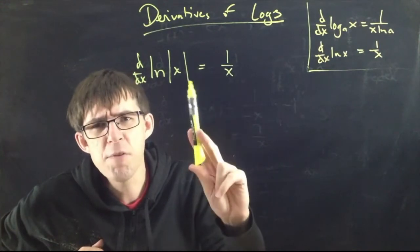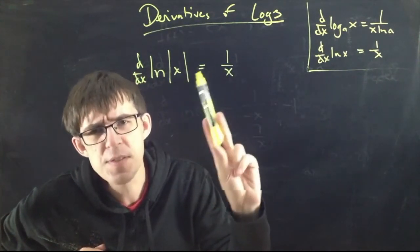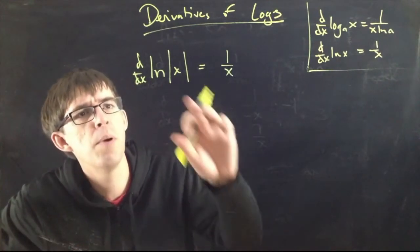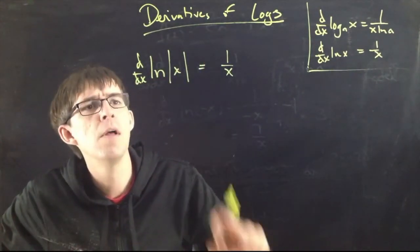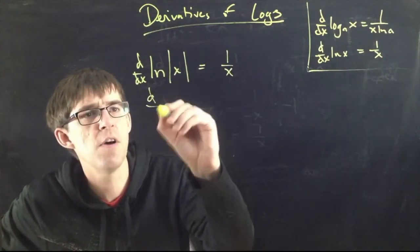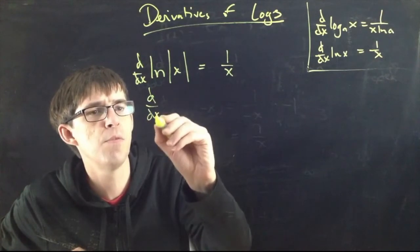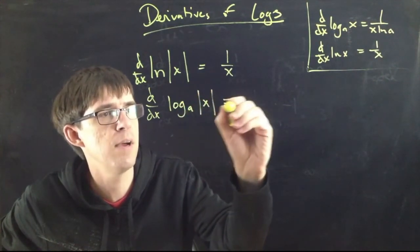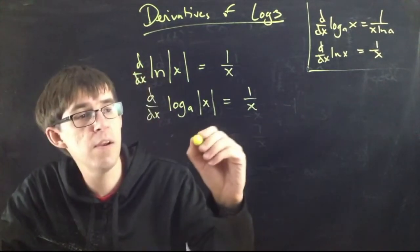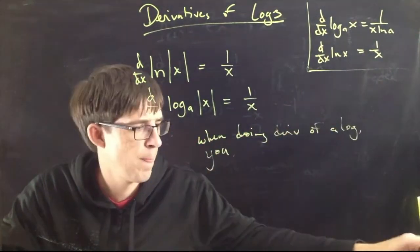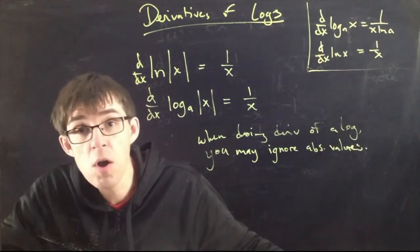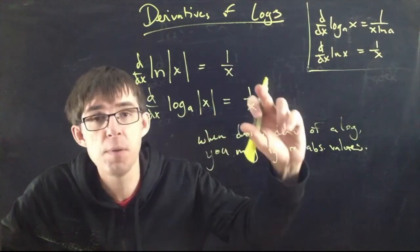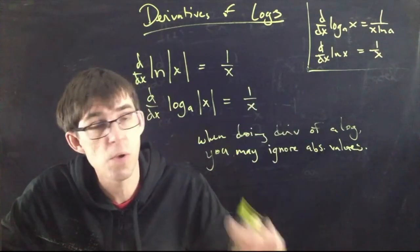What that means is: the derivative of the log of the absolute value of x equals 1 over x. This is the same as the standard formula, only with absolute values inside. When you're taking the derivative of the log of something, it doesn't matter if that thing is positive or negative — you get the same answer either way. So you can put absolute values in there and it will not change the answer. The result is just 1 over x, not 1 over absolute value x. Why would you ever encounter log of absolute value? It turns out this comes up a lot — you'll have to take my word for it for now.